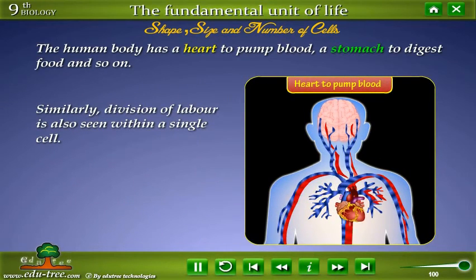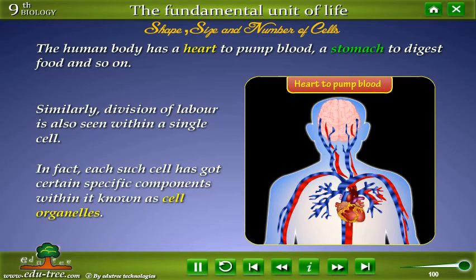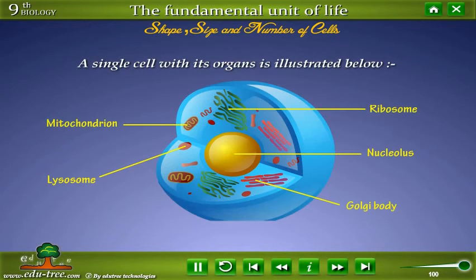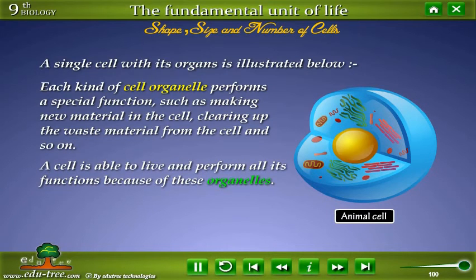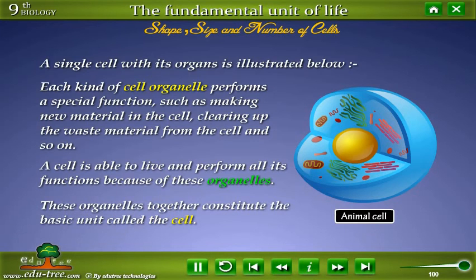Similarly, division of labour is also seen within a single cell. In fact, each such cell has got certain specific components within it known as cell organelles. A single cell with its organelles is illustrated below. Each kind of cell organelle performs a special function, such as making new material in the cell, clearing up the waste material from the cell, and so on. A cell is able to live and perform all its functions because of these organelles. These organelles together constitute the basic unit called the cell.